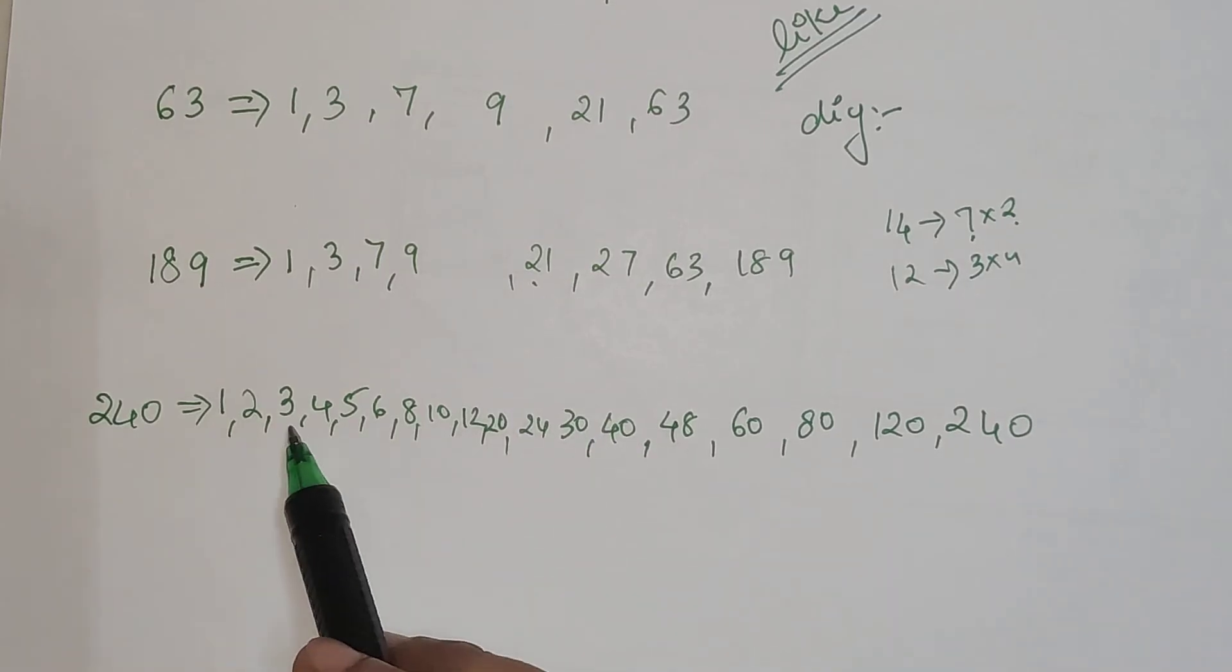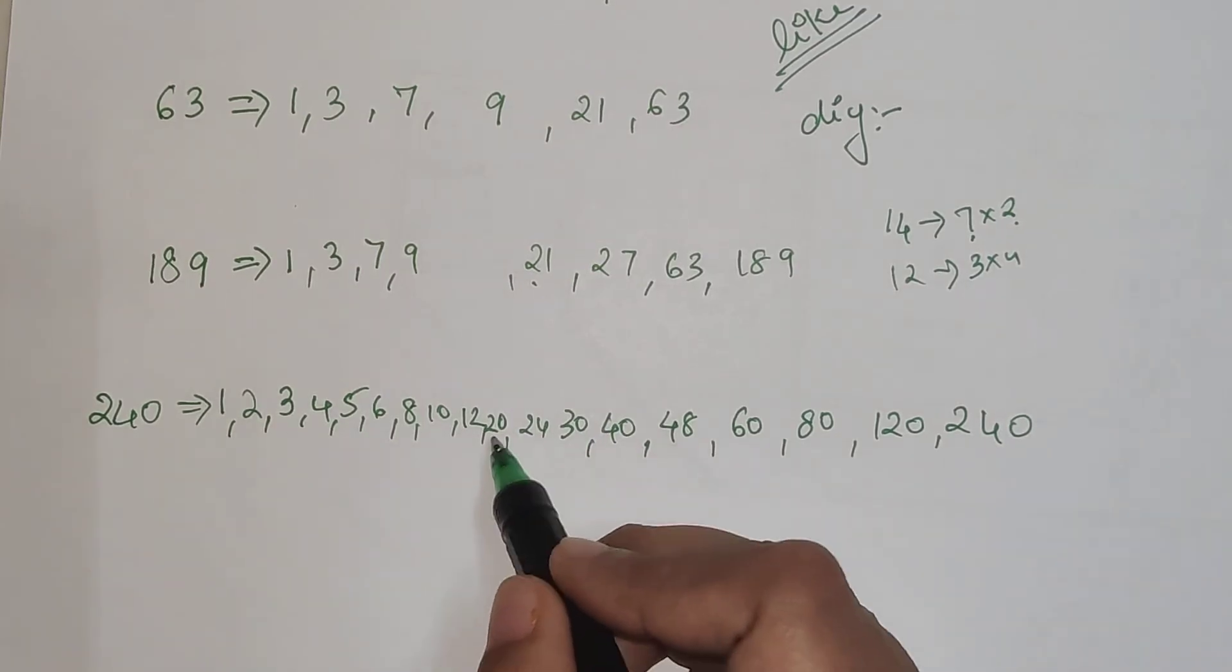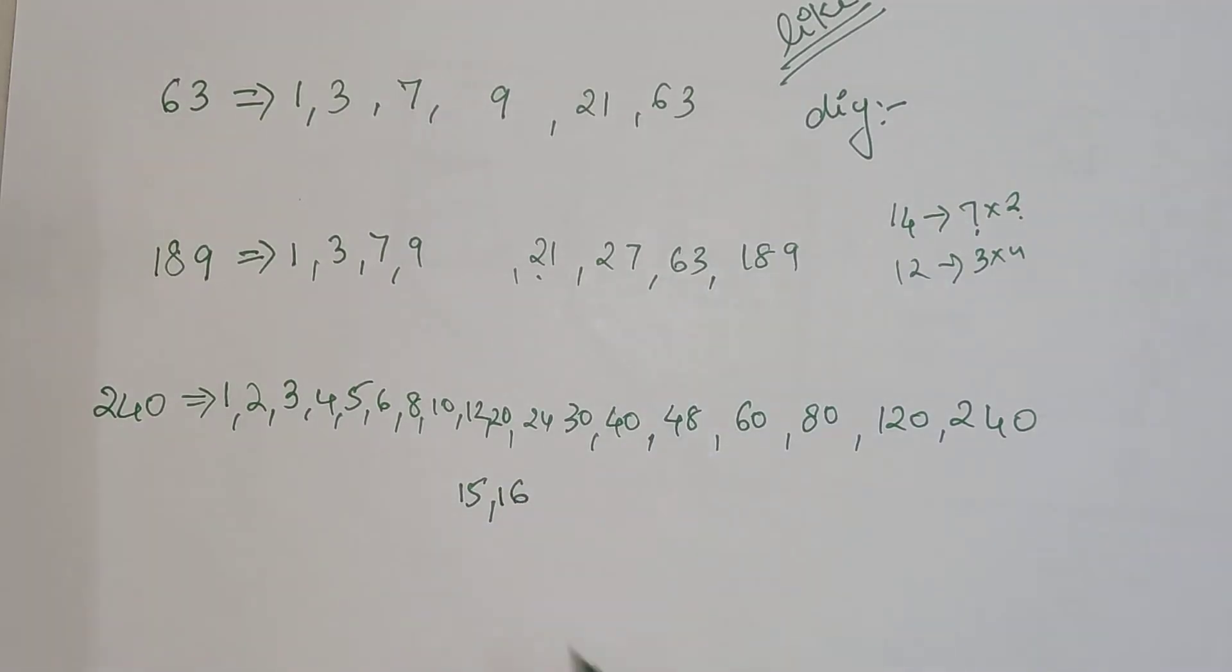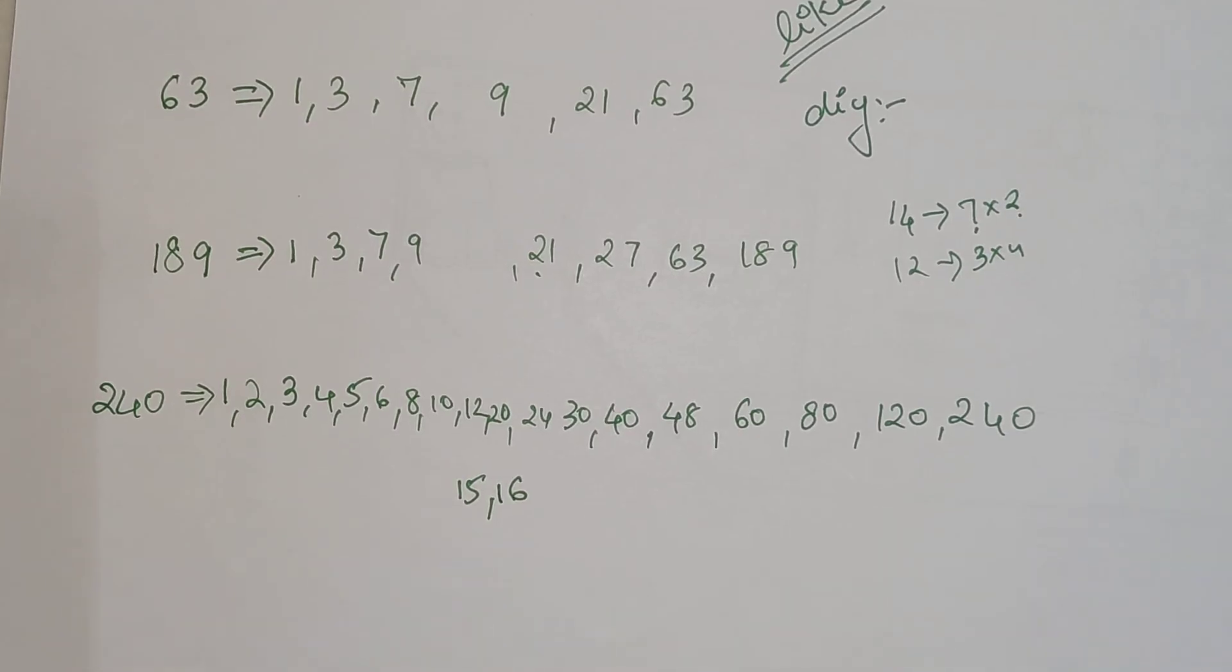After that we have 13, which doesn't go. 14 doesn't go. 15 oh yes, 15 will go because 3 and 5 are there. So we'll write 15 and we will have 16 with it. So 15 and 16 is taken care of, so obviously after that we don't have to worry.